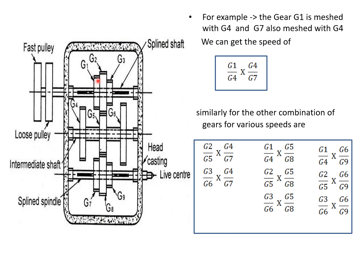For example, gear G1 is meshed with G4, and gear G7 is meshed with G4. Hence, we can get the speed of G1 by G4 multiplied by G4 by G7. So, that is first speed reduction. Similarly, for other combination of gears for various speeds are G2 by G5 multiplied by G4 by G7, then G3 by G6 into G4 by G7.